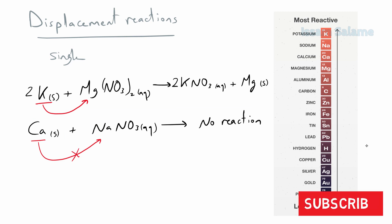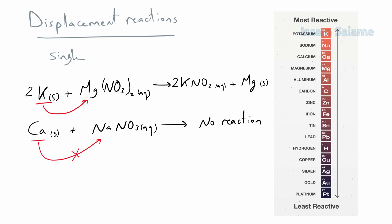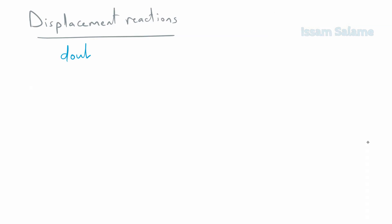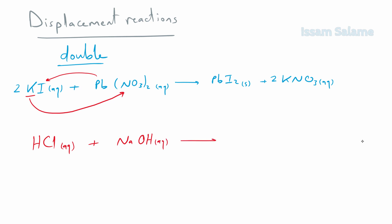If you find it difficult to write ionic compounds, I will keep a link in the description that would help you. Now let's talk about double displacement reactions. In the following example, the reaction of potassium iodide with lead nitrate will produce lead iodide and potassium nitrate.